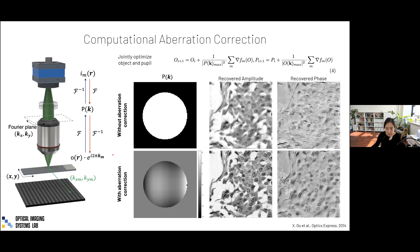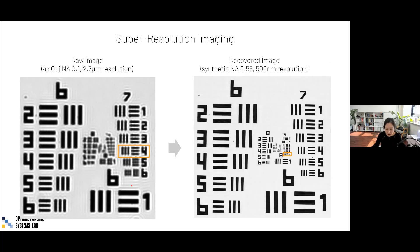Since the invention of FPM in 2013, many papers have been published by groups worldwide on different algorithms, approaches, and hardware. Our group is also working on FPM. We start with a very low magnification, low-NA objective lens, which gives us low initial resolution. But after taking about a hundred images and running our FPM reconstruction algorithm, we achieve much higher resolution with a synthetic numerical aperture of more than 0.5. This synthetic NA is determined by both the objective lens's aperture and the maximum angle of illumination.